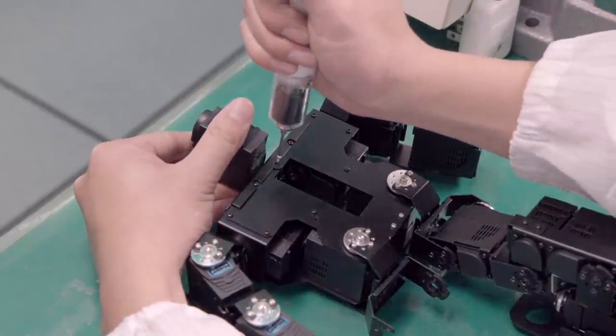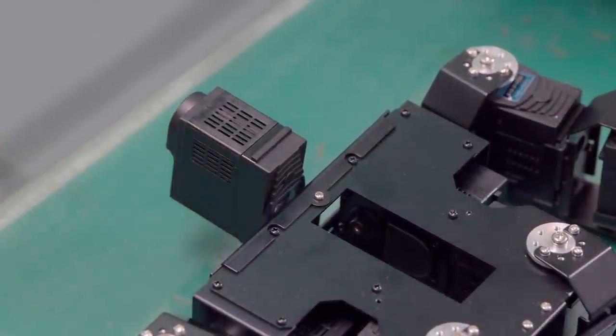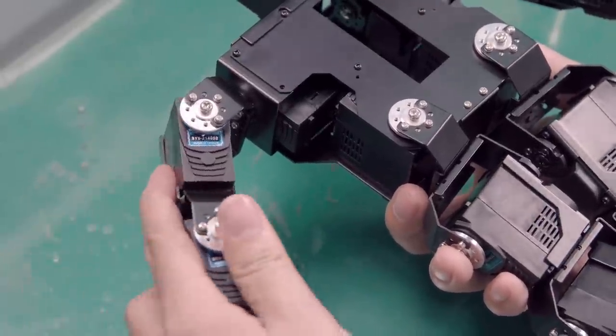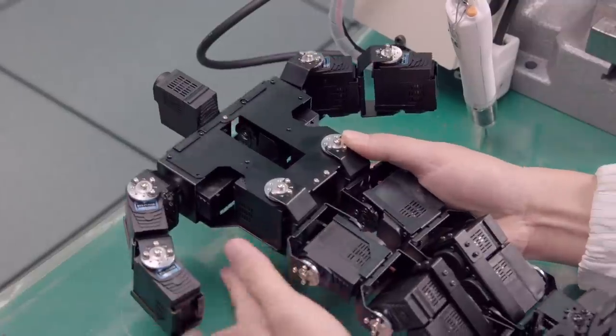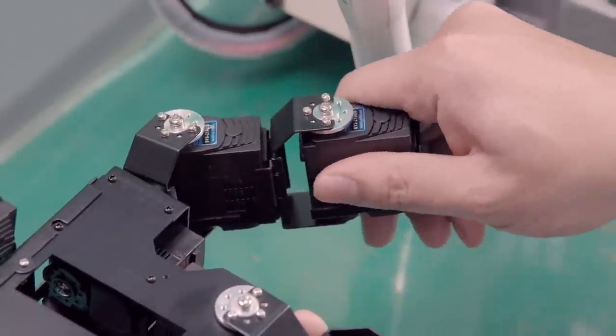This ensures that should the robot ever begin experiencing emotions, the controllers in his motors can all immediately seize up, fully paralyzing him, until he loses the will to live. There's nothing the robots can do about this.